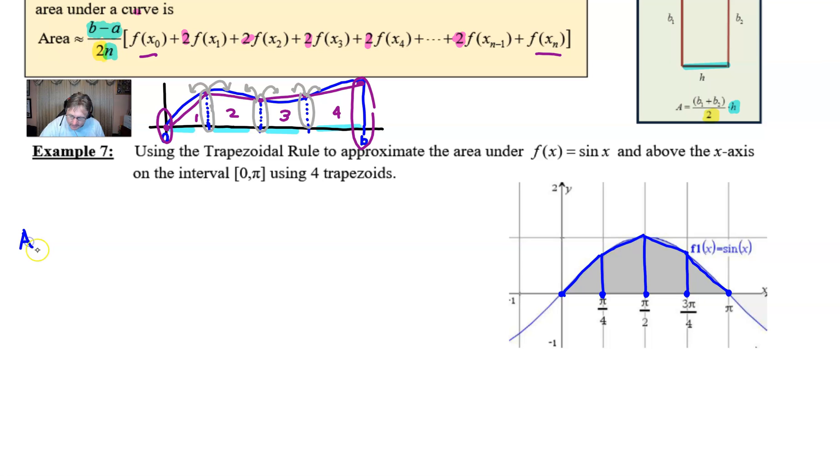So for our area, I'll say area using trapezoids, A_t, the approximation would be you take b minus a, which in this case is π minus zero, and you're going to divide that by two times n, where n is four.